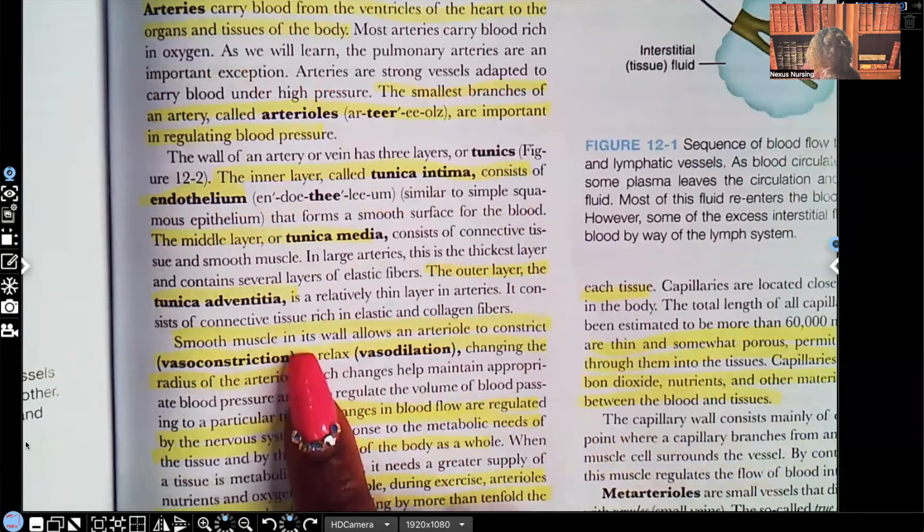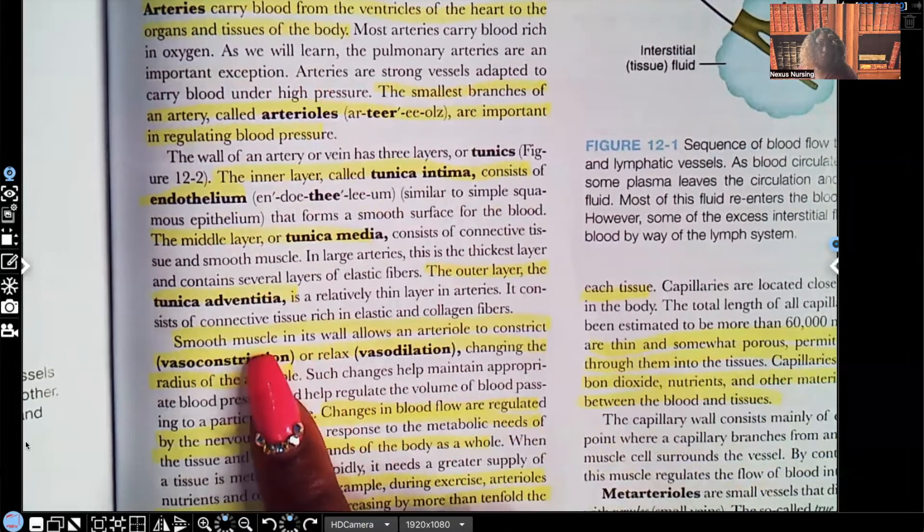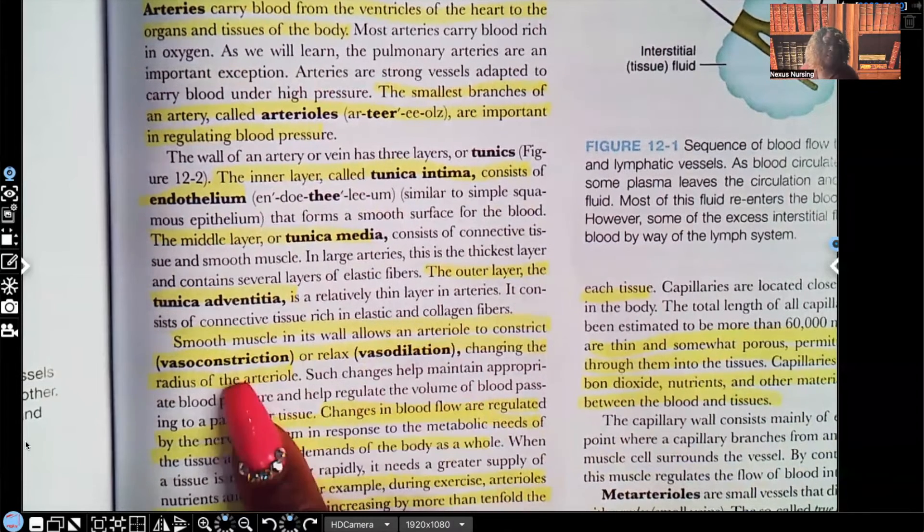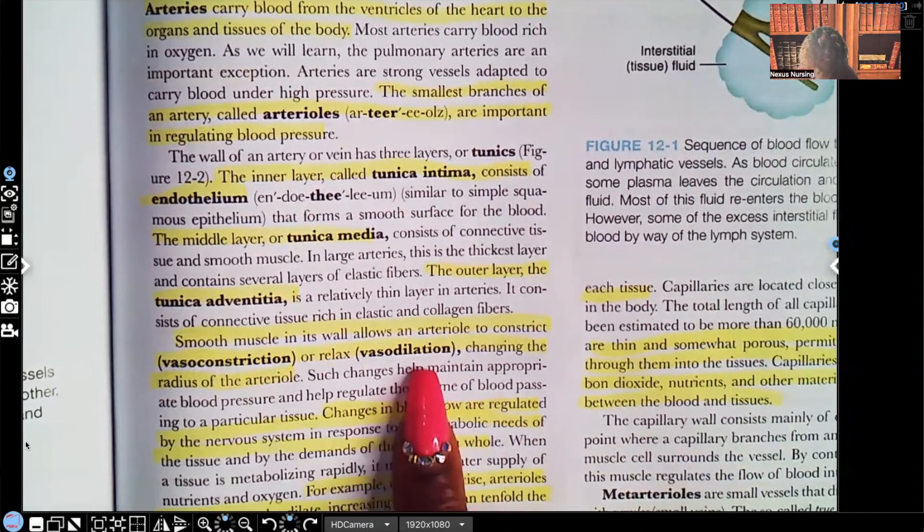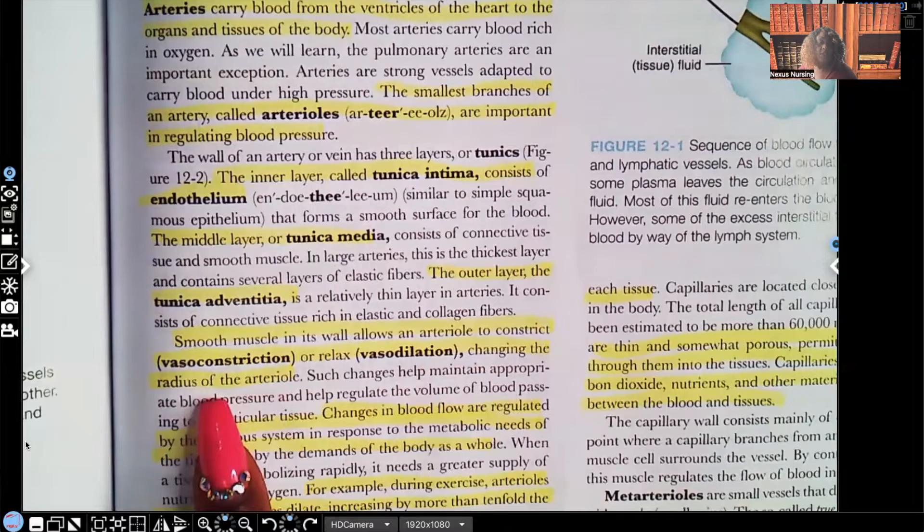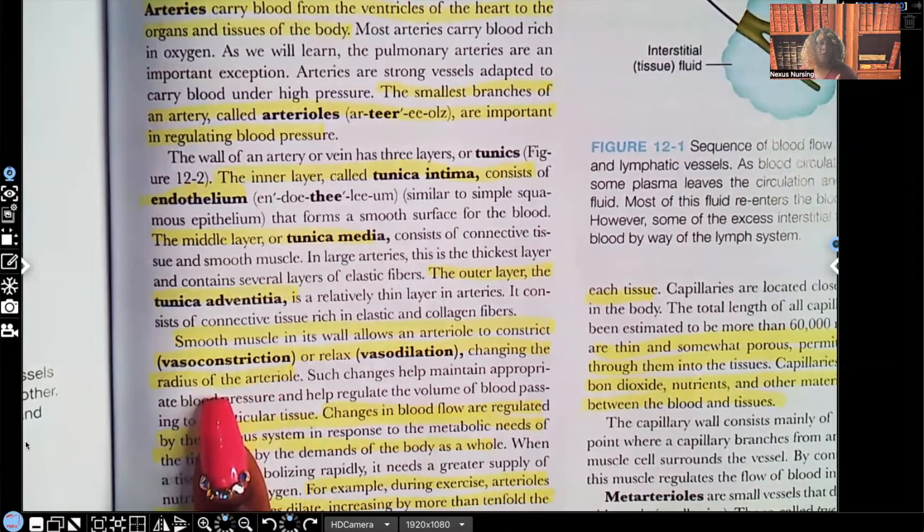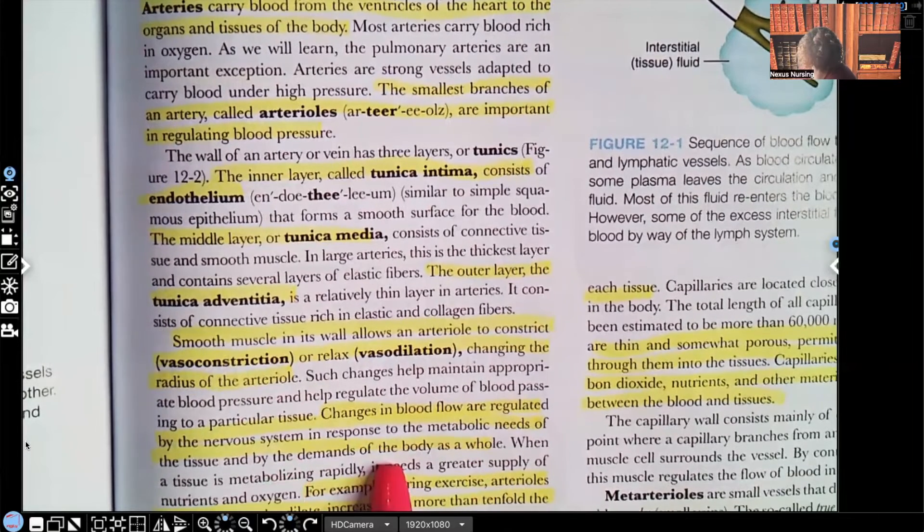Smooth muscle in its wall allows, remember what I told you about the arterioles, they're important for blood pressure maintenance. They can either constrict or dilate. Well, it's a smooth muscle that allows it to do this. Look at what it says. Smooth muscle in this wall allows the arteriole to constrict. That's vasoconstriction. By the way, vasoconstriction will cause the blood pressure to go up. Or relax, that's dilation, vasodilation, and that will cause the blood pressure to what? Go down. And this changes the radius of the arteriole. Obviously, guys, think about it. If we have vasoconstriction going on, the radius of the arteriole is going to be much smaller than if we have vasodilation and the radius is going to be much larger.